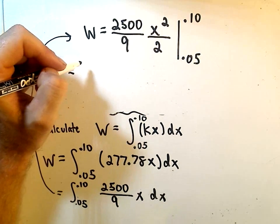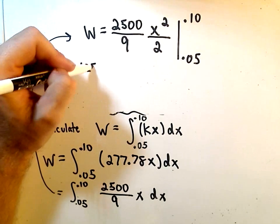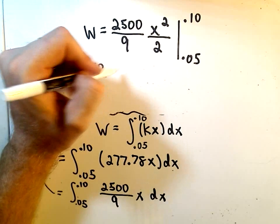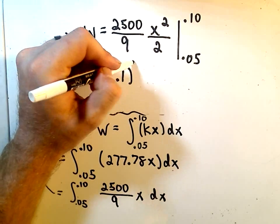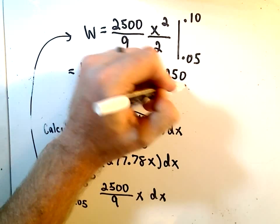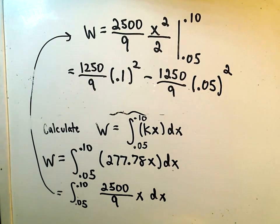Pretty tedious at this point. If you take 2500 and divide it by 2, that's 1250 over 9. And then you'd have to take 0.1 and square it, so there's the upper limit of integration, minus 1250 over 9. We'll have to plug in the lower limit of integration, 0.05 squared.